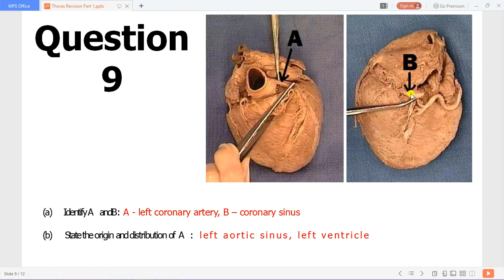You can appreciate the coronary sinus because this is the opening for the inferior vena cava. Remember the origin and distribution of A - it originates from the left aortic sinus and usually supplies the majority of the left ventricle of the heart.